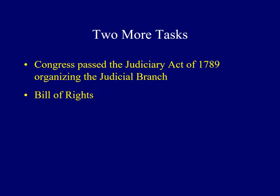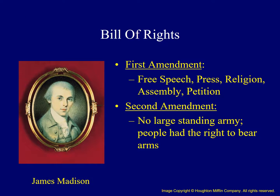Another task for Congress was to pass a Bill of Rights. This had been promised by supporters of the Constitution to appease anti-federalists during the fight for ratification. Congress proposed several amendments and ten were adopted by the states, becoming part of the Constitution in 1791. Their primary author was James Madison. Some have called the First Amendment the most important, as it protected the rights of free speech, press, and religion, as well as the right to peacefully assemble and to petition the government.